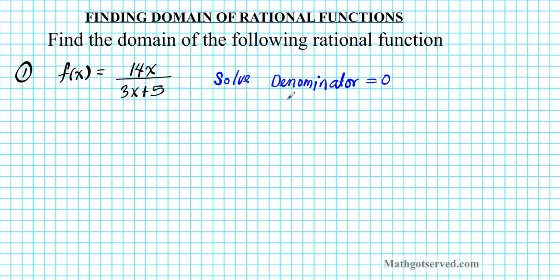The denominator set equal to 0 — if you solve that, you get the values that should be excluded from the domain. The numerator is 14x and the denominator is 3x plus 5, so we set 3x plus 5 equal to 0.